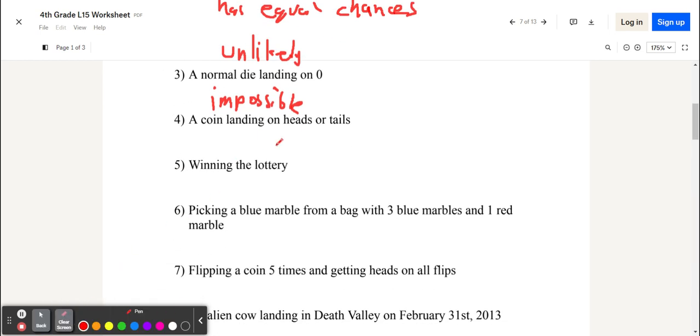A coin landing on heads or tails. If it lands on heads or tails, that's certain to happen, because if you flip a coin, it's going to land on either of those. So, that's definitely going to happen.